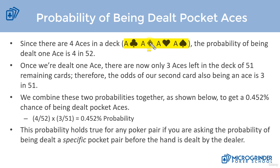There's the ace of clubs, ace of diamonds, ace of hearts, and ace of spades. We know the deck has a total of 52 cards. So the probability of being dealt one ace is 4 in 52. There are 52 cards in that deck, and out of those, four are an ace. So the chance of being dealt an ace with that first card is 4 in 52.